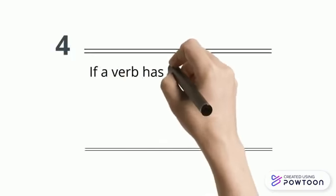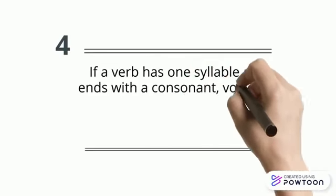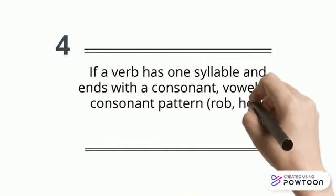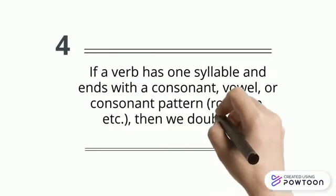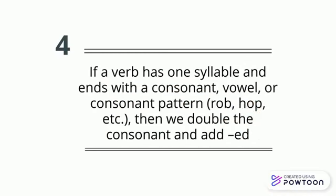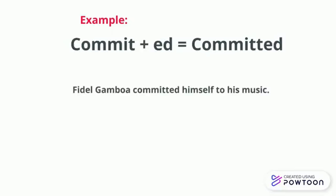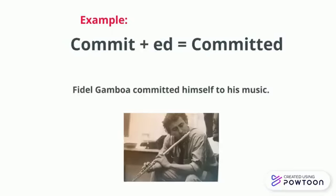If a verb has one syllable and ends with a consonant-vowel-consonant pattern, as in rub or hop, then we double the consonant and add ED. As we can see, commit plus ED becomes committed, as in: Fidel Gamboa committed himself to his music.